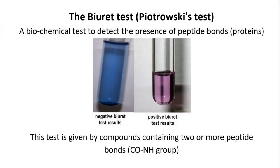The Biuret test, also known as Piotrowski's test, is a biochemical test used to detect the presence of peptide bonds and thereby proteins in a given substance.